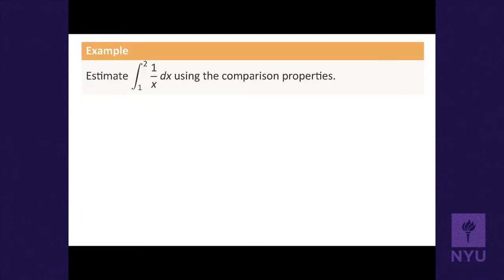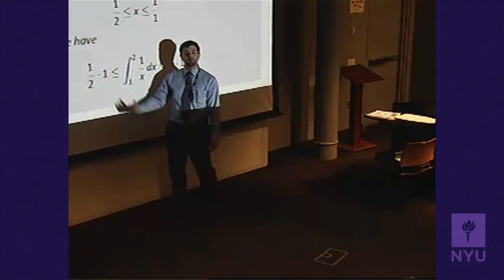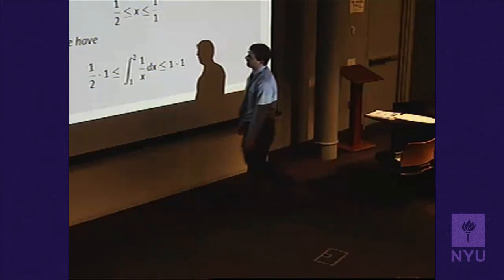We can use these comparison properties to estimate integrals. For example, estimating the integral of 1/x between 1 and 2: the biggest 1/x gets on [1,2] is 1, and the smallest is 1/2. So 1/2 ≤ 1/x ≤ 1, which means 1/2 × (2 - 1) ≤ ∫₁² (1/x)dx ≤ 1 × (2 - 1). We can say the integral is between 1/2 and 1.